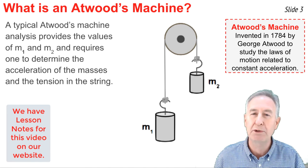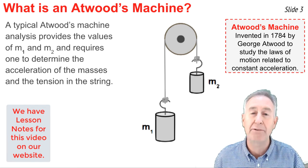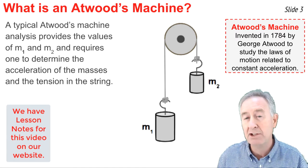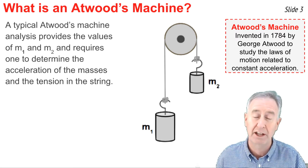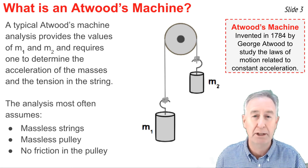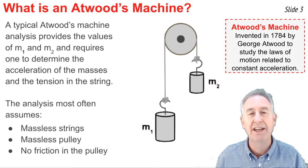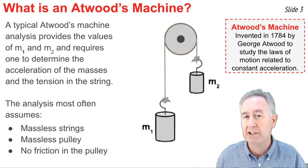A typical Atwood's machine scenario provides values of the masses that are hanging by the strings and asks you to calculate the acceleration of those masses and the tension in a string. An Atwood's machine problem typically assumes that the string is massless and doesn't contribute to the overall mass of the system.